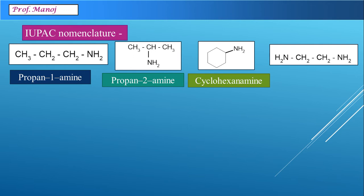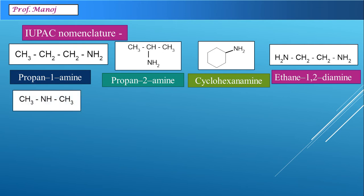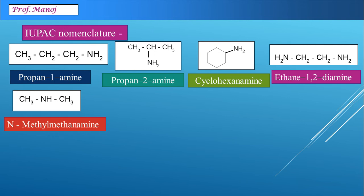A 2-carbon chain connected to amine groups on both ends is named ethane-1,2-diamine. Note that due to the elision rule, the 'e' of ethane is retained here. For a secondary amine with two methyl groups connected to nitrogen, we consider CH3NH2 as the parent compound, that is methanamine. Since a methyl group is connected to the nitrogen of methanamine, the name becomes N-methyl-methanamine.